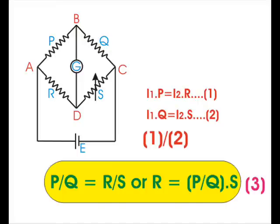Hence, we can see in equation 3, resistance R can be determined in terms of other known resistances of the bridge. Thank you.